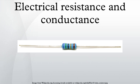Light illumination dependence: Some resistors, particularly those made from semiconductors, exhibit photoconductivity, meaning that their resistance changes when light is shining on them. Therefore they are called photoresistors. These are a common type of light detector.